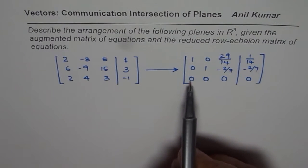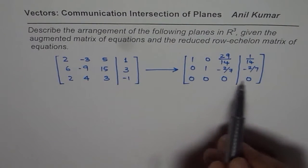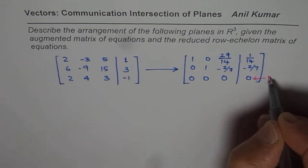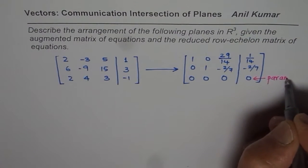The last line 0, 0, 0 equals 0 is always true. Since it is always true, it leads to one parameter.